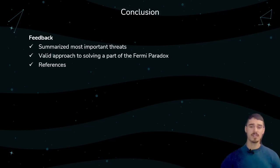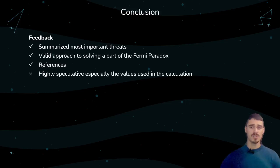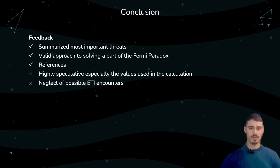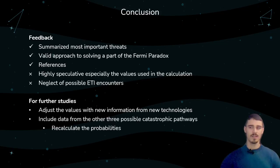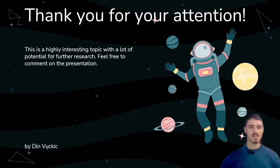The research was based on many different references to include all possible aspects and the best data available. However, the values used in the calculations are still highly speculative, and the paper also rejects the possibility of ETI encounters that could alter the way civilizations develop. The potential for further studies is huge — with new technologies arising every day, newer and more precise information will be available to update the values and increase precision. Another great follow-up study could include the other three possible catastrophic pathways to further extend the calculations and get more precise probabilities and outcomes. Thank you for your attention.